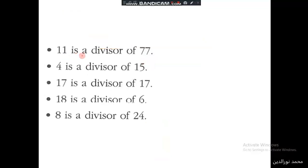11 is a divisor of 77. How to check if a number is divisor of another or not? We have this method. We have to divide 77 by 11. This is the first method. 77 divided by 11 is 7 and the remainder is 0. We could say yes, it's true. 11 is a divisor of 77.